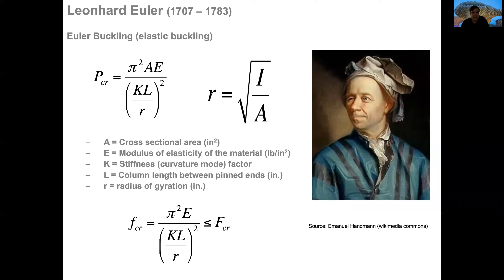The calculations about steel columns were formulated first by a mathematician called Leonhard Euler. Euler's work introduced what is called Euler buckling or elastic buckling. He put together a series of elements that are important when we are doing calculations of columns.